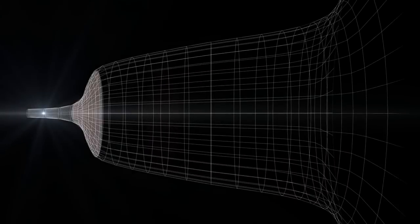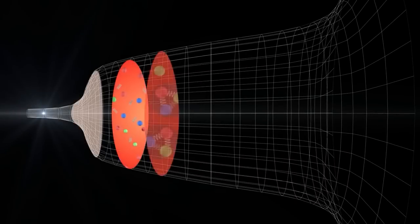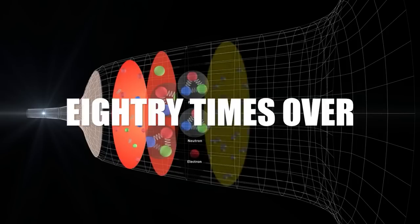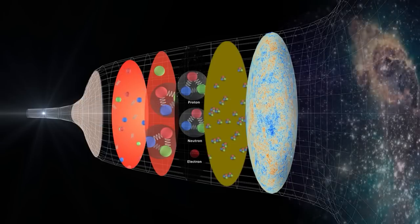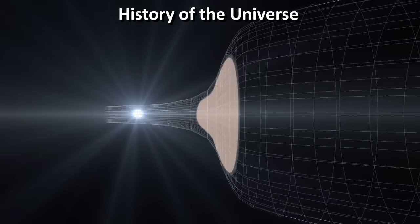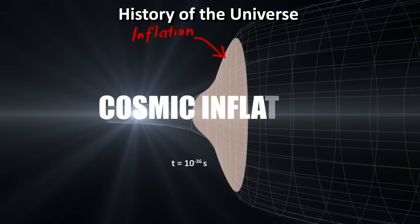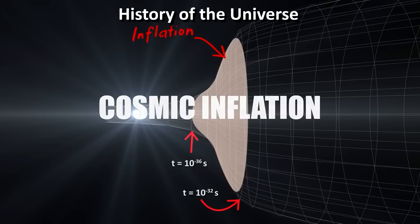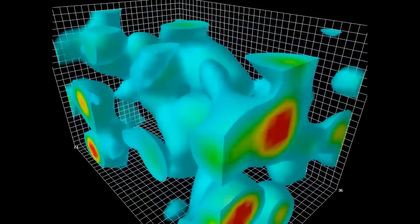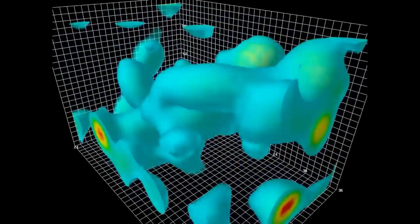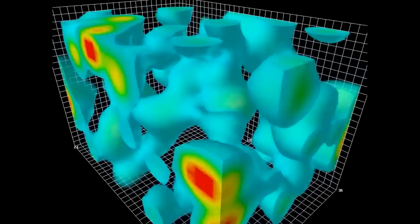Imagine this: the universe doubled in size, not just once, but at least 80 times over, all within a time frame so minuscule it makes a blink seem eternal. This process, often referred to as cosmic inflation, suggests that the universe inflated faster than the speed of light. As for the mechanism behind this massive expansion, scientists are considering fields of exotic energy and even quantum fluctuations as potential catalysts.